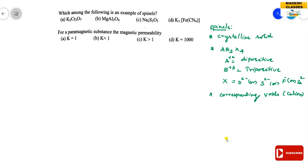Based on the position of the occupation of voids, the spinels are classified into mainly three types: one is the normal spinel, another is the inverse spinel, and the mixed spinel. First we see the normal and inverse spinel, and finally the mixed.